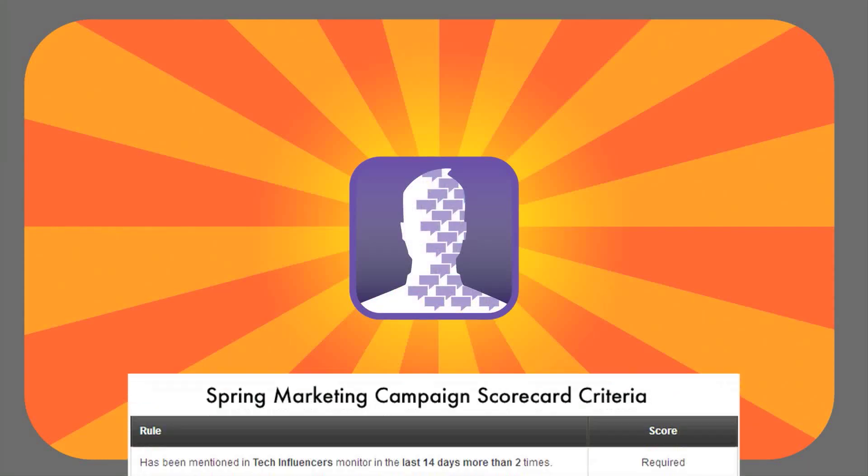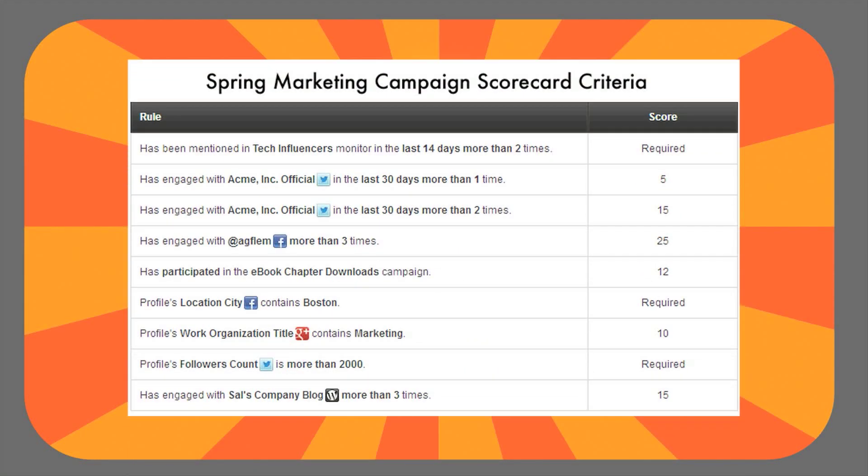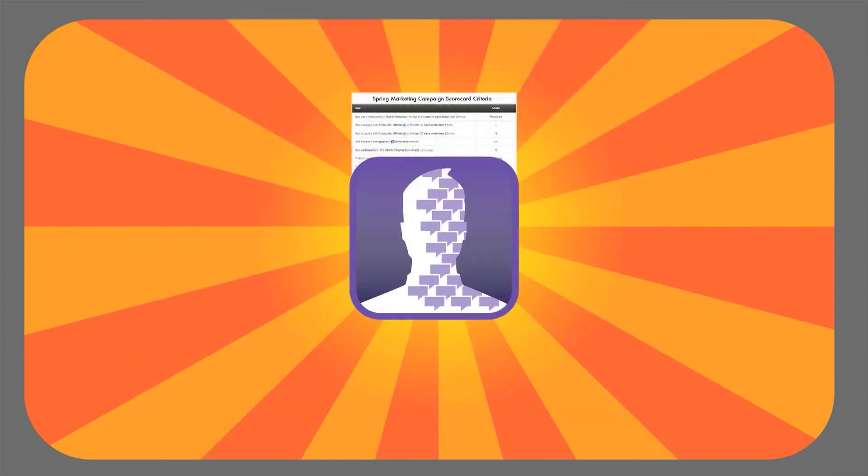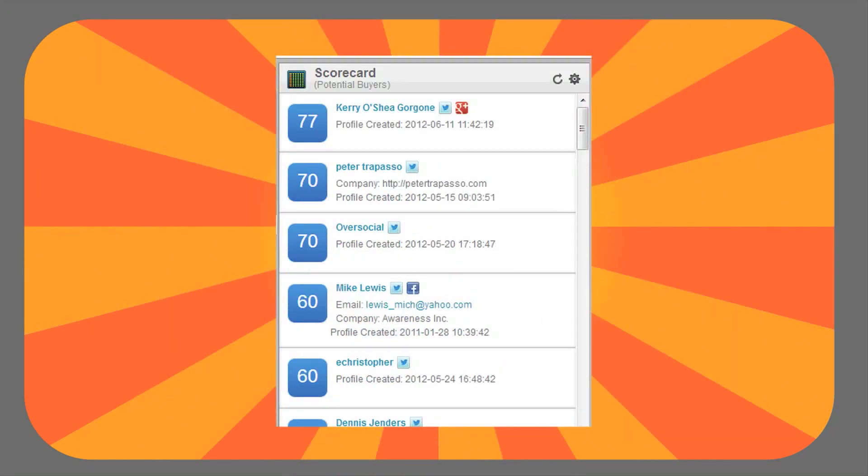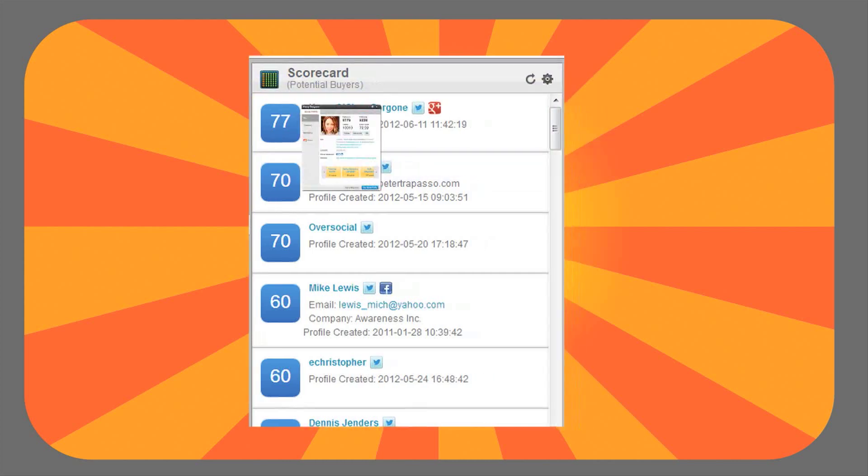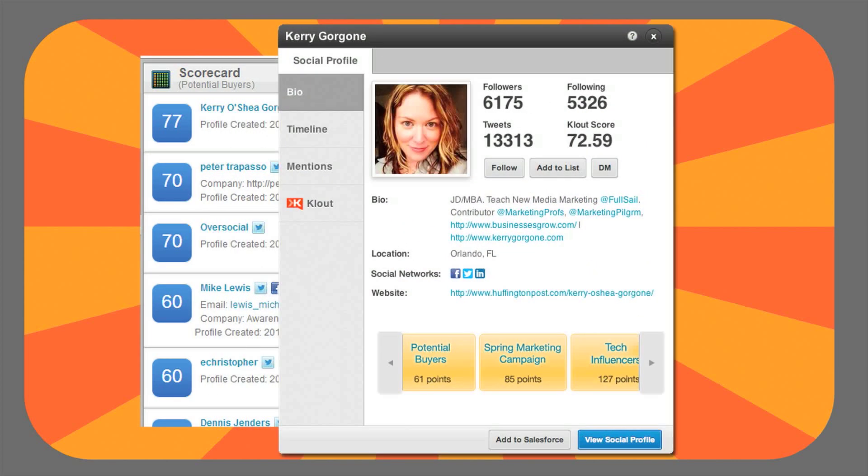Using social scoring technology, they can write their own rules to define what influence means to their brand and identify the best prospects for each campaign. The database is rescored daily using these rules so you always know the best prospects at any given time.